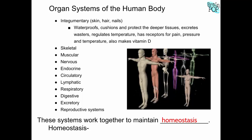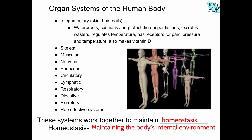Homeostasis means keeping constant or proper internal conditions — maintaining the environment we need inside our body. We have a narrow range of conditions that we can survive: we need certain amounts of oxygen, energy, temperature, and so forth. These body systems work to keep those conditions at the proper level.